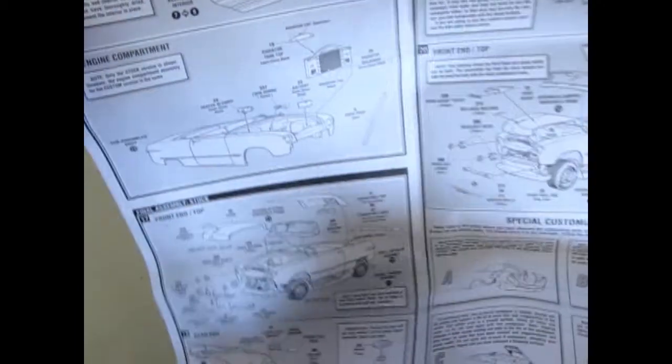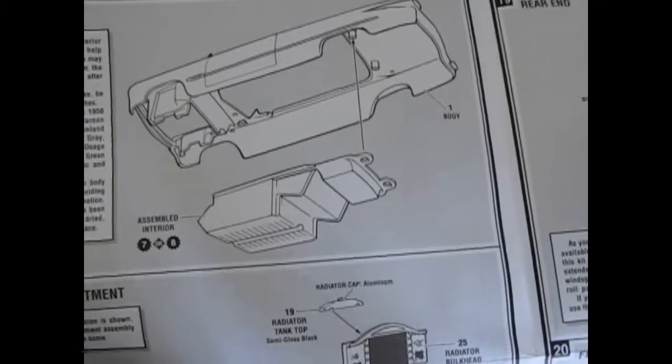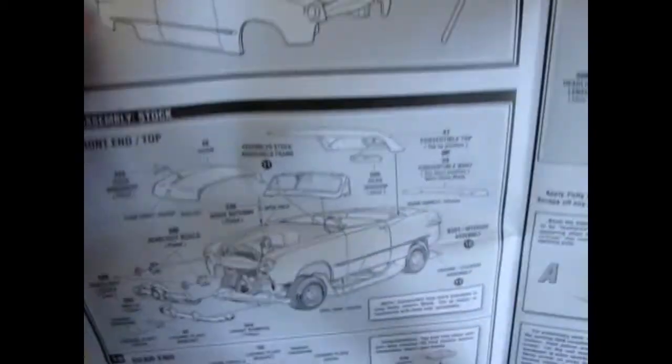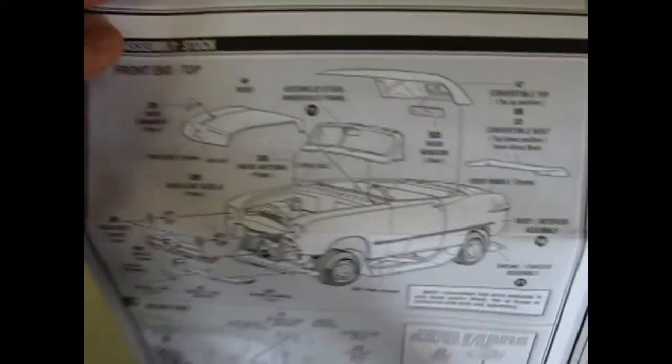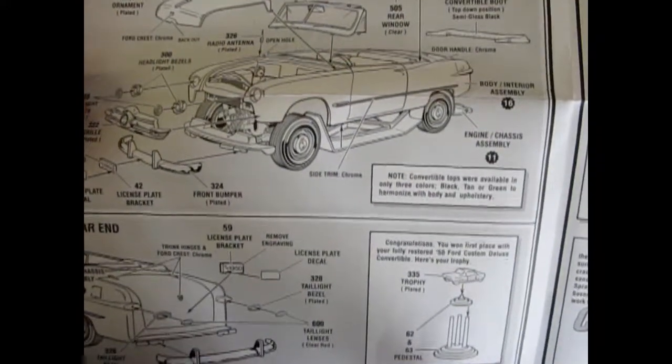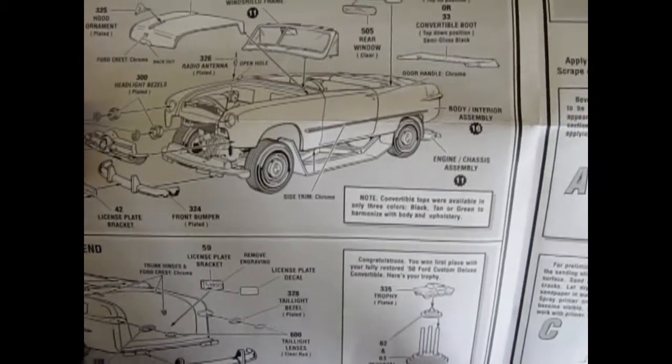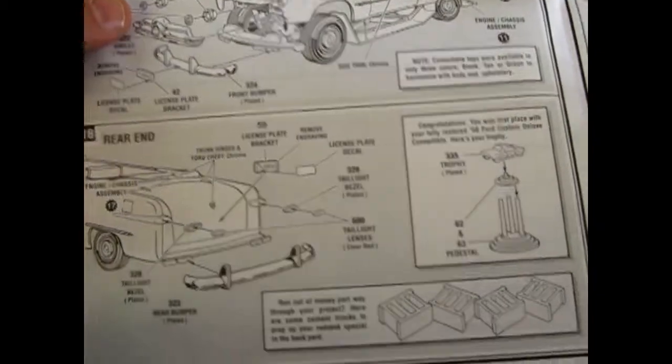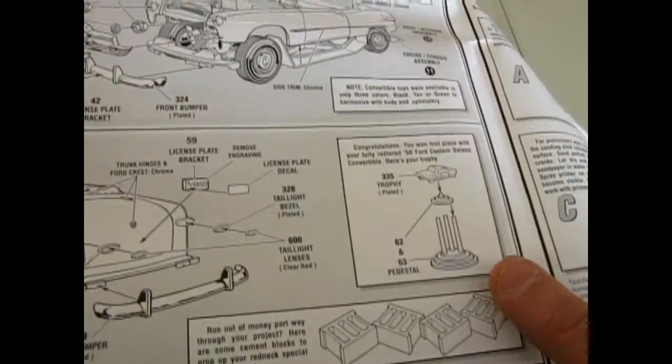Then as we look at the back of these instructions, you see of course our body going together and the radiator going in. And now here's the stock assembly. You get your choice of convertible top up or convertible boot down, as well as the rear end. And they give you these cinder blocks and a trophy.